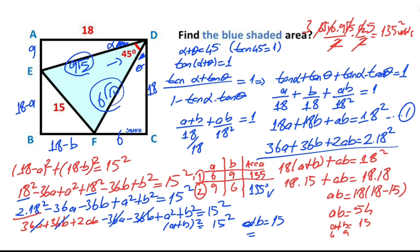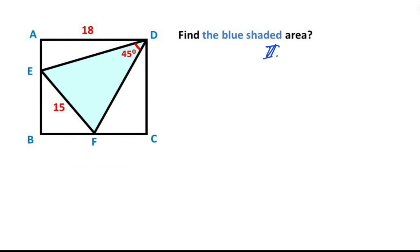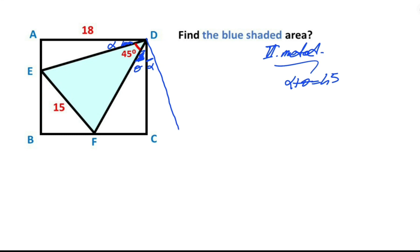That was the long way. Now let's calculate the blue shaded area using the short way. Let's label these angles alpha and theta again — we know alpha plus theta equals 45 degrees. Taking a copy of angle alpha here and marking a point K in this corner, notice this angle must be 90 minus alpha.